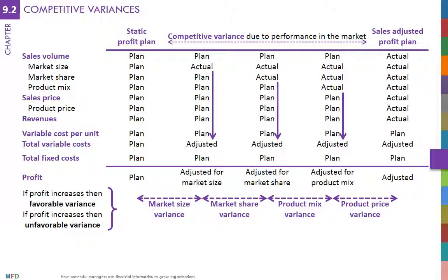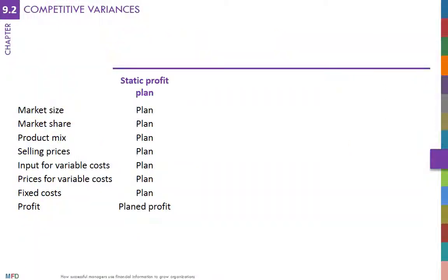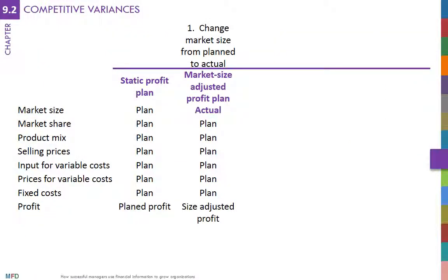The original profit plan has all variables at the planned level, and planned sales are planned market size times planned market share times planned product mix times planned price. First, we change the size of the market from its planned level to its actual level, keeping all other variables at the planned level, and the profit plan is redone.